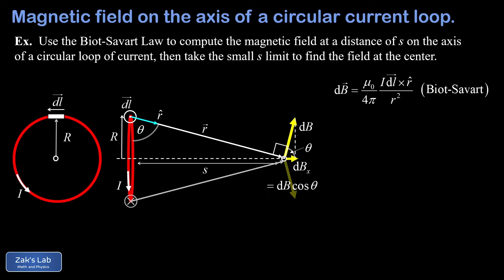Now we can relate cosine theta to the dimensions in our diagram: cosine theta equals adjacent over hypotenuse, which is big R divided by the magnitude of the position vector little r. We're ready to set up the integral for dbx — the horizontal contribution due to a single dl. Since all contributions point in the same direction, we only need to add their magnitudes, so we drop the vectors from our calculation.